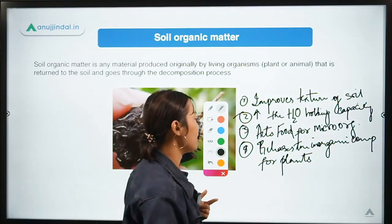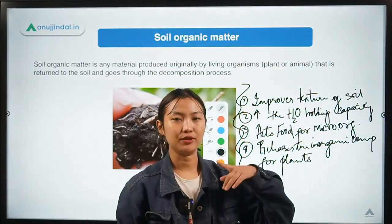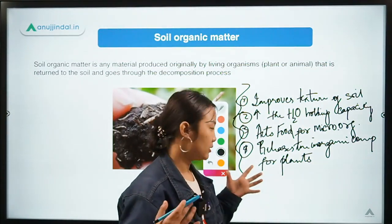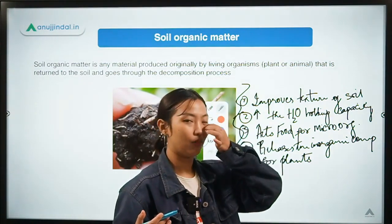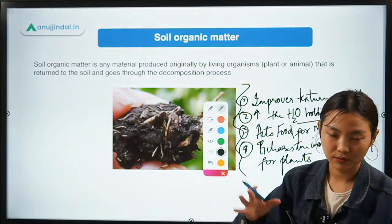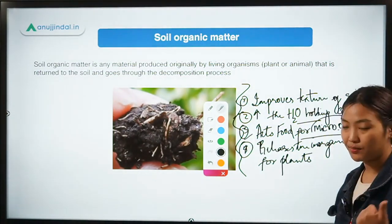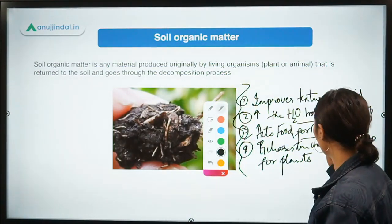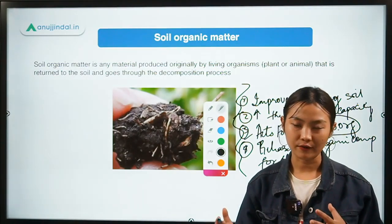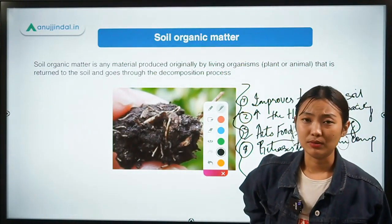Once organic matter improves the texture of the soil, aeration will be better, transportation of water and nutrients will be much better, and it's going to help crop production and yield. Once you can hold water in the soil, availability of water to the plant improves and no water is leached off. Acting as food for microorganisms drives more microbial activity, which leads to decomposition and provides minerals and nutrients for the plants.